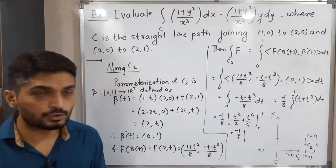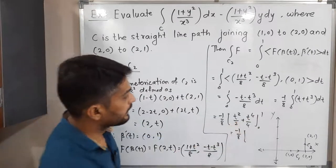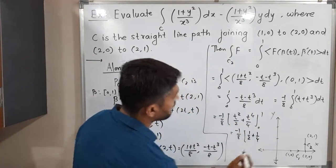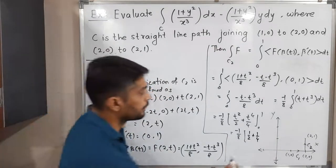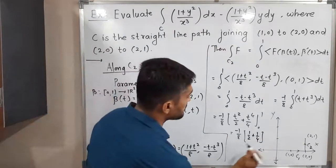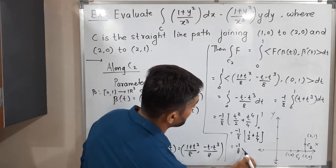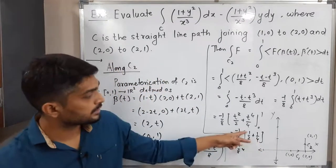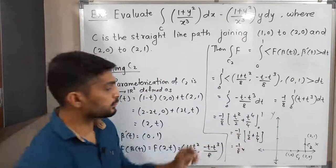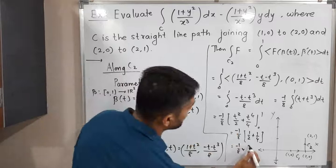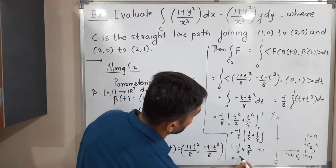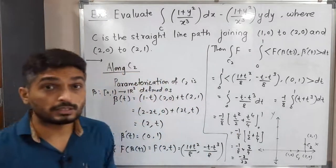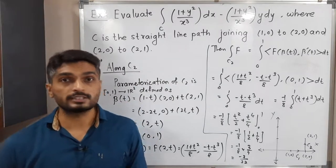Integrating: t²/2 + t⁴/4, evaluated from 0 to 1. Putting t = 1: 1/2 + 1/4 = 3/4. Putting t = 0: 0. So we have −1/8 times 3/4 = −3/32. This is the line integral of f along c2.